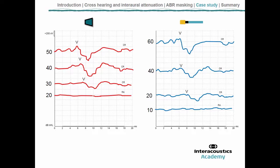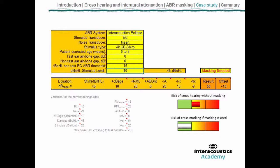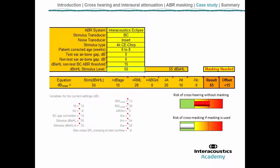Because hearing on the left ear is so good, we aren't necessarily confident that these responses clearly originate from the right ear — the responses recorded from the right ear may be detected by the left ear. Masking may be required. We had 30 dB nHL as the unmasked threshold, so we input that information into the masking calculator. The stimulus is now presented by BC, and with all other information similar to before and stimulus level of 30 dB nHL, the calculator confirms a risk of cross-hearing, and we need a masking offset of plus 15 dB.